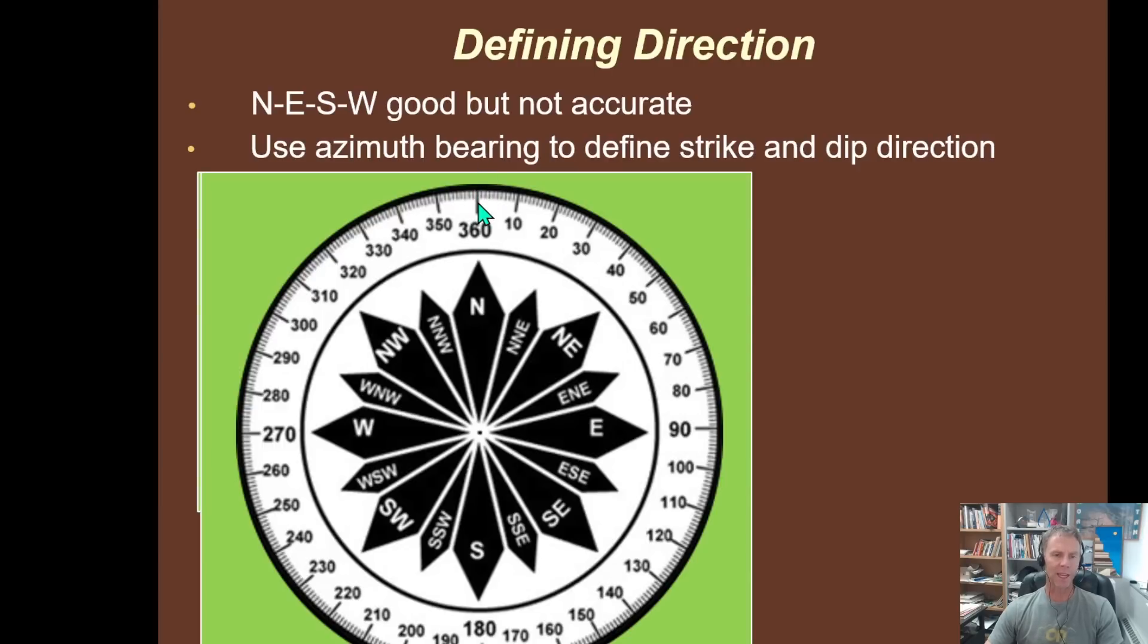And by the time we're back to 360 or north, we've completed that full circle there. So this is a more precise way of doing it. Rather than saying the rocks are striking northeast, you could say the rocks are striking at 36, an azimuth of 036. So actually being a little bit more specific.